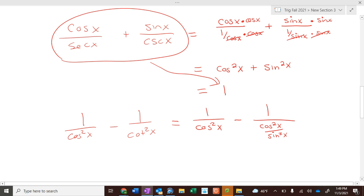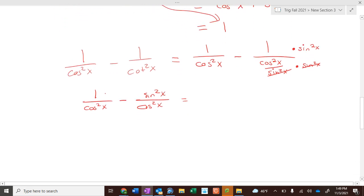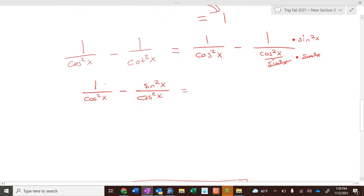Hey, look. I have a complex fraction. How do I get rid of my complex fraction? Multiply by the denominator of the denominator. Sine squared of x. Sine squared of x on the top and the bottom. That cancels that out. So, I have 1 over cosine squared of x minus sine squared of x over cosine squared of x. Which, when you add and subtract fractions, you need a common denominator. Do I have a common denominator? Yeah. So, I have 1 minus sine squared of x over cosine squared of x.